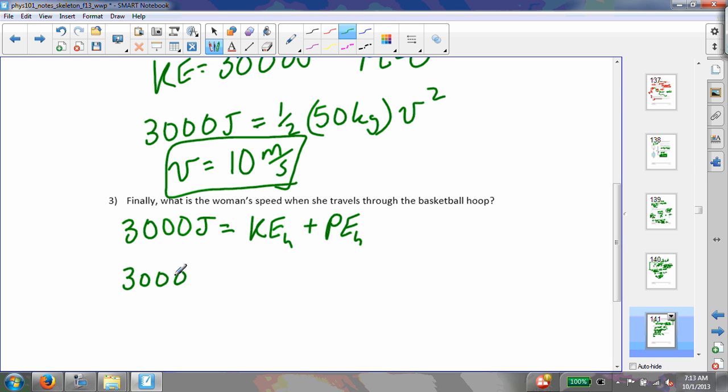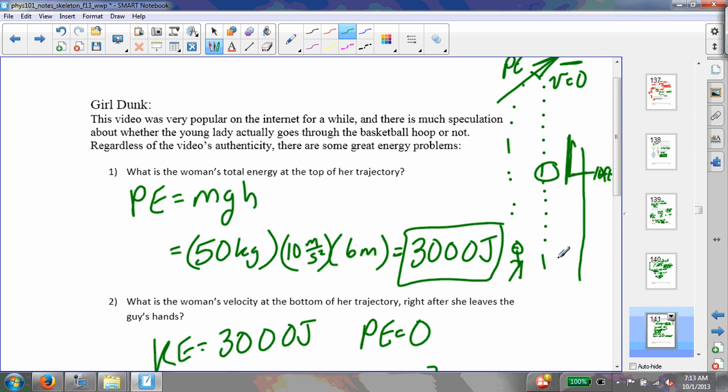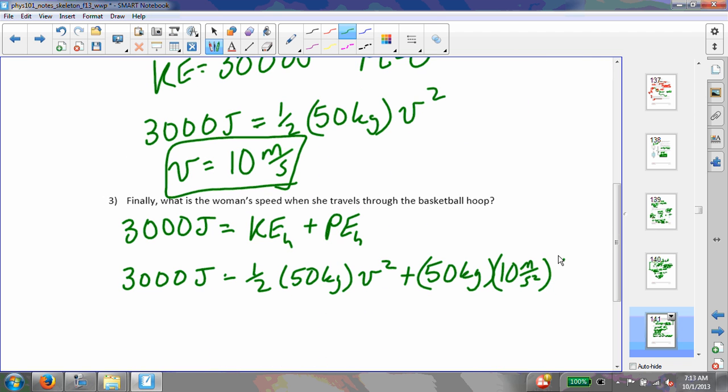Alright, so she has 3,000 joules, equals one half of m, which is 50 kilograms, v squared, plus m, which is 50 kilograms, 10 meters per second squared, times h, which, let's say that was about 3 meters, about 10 feet or 3 meters. Alright, and then I solve this for v, and I find that her speed is 8 meters per second.